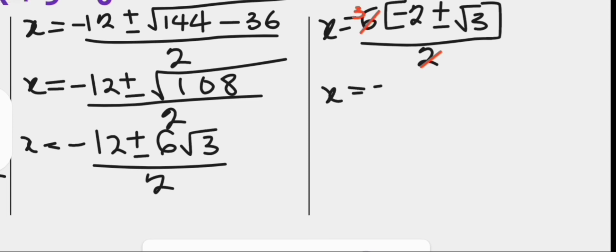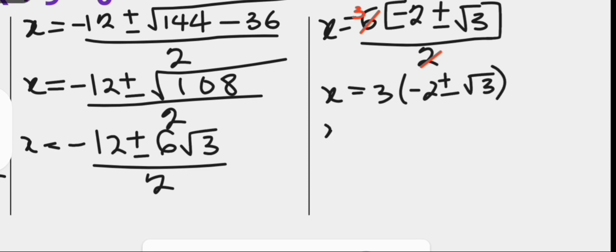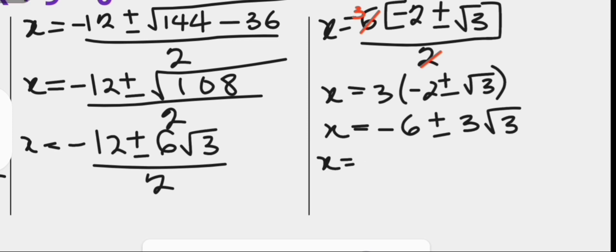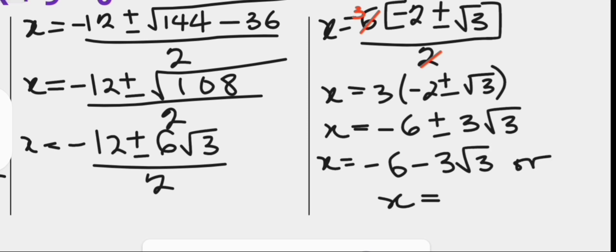Then 2 goes into 6 three times, so that we have x equals to 3 into bracket, negative 2 plus or minus root 3. Opening the bracket up again, we have x equals to minus 6 plus or minus 3 root 3. Separating this result into the two roots: x equals minus 6 minus 3 root 3, or x equals to minus 6 plus 3 root 3. These are the roots, or the solutions to the quadratic equation.